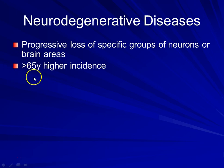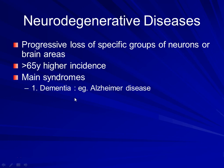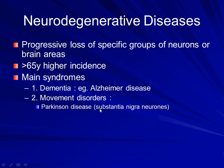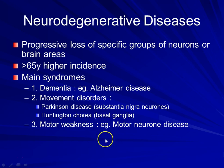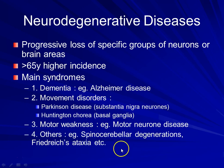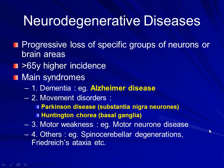Usually they occur in more elderly patients, but not always. There are several main syndromes: one is cognitive impairment such as dementia, and of course the poster disease for this would be Alzheimer's disease. There are movement disorders such as Parkinson's disease and Huntington's chorea, and then motor weakness such as motor neuron disease, and other more specific localized diseases such as spinal cerebellar degenerations or Friedrich's ataxia. Here, I'm only going to be talking about Alzheimer's disease, Parkinson's disease, and Huntington's chorea, mercifully.